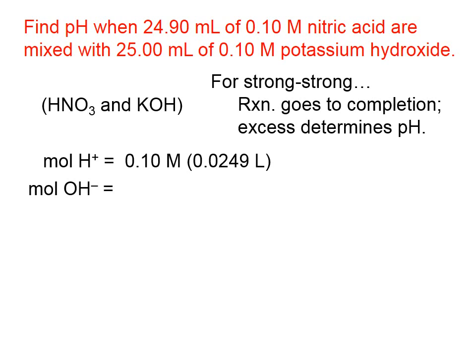Since molarity is moles divided by liters, we can calculate the moles of hydrogen ion by taking the molarity of the acid, and this is a monoprotic acid multiplied by the number of liters, and you can see I've turned 24.9 milliliters into liters. That gives us 0.00249 moles of hydrogen ion.